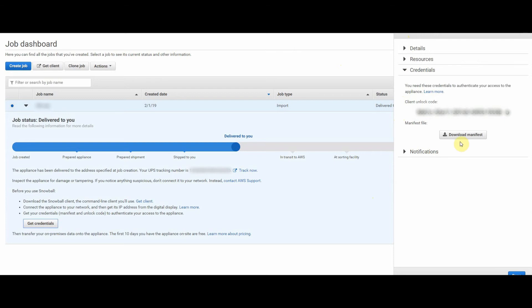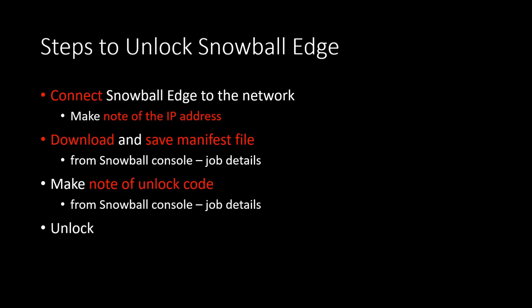So you have to connect the Snowball Edge to the network and you will get the IP address. Then download and save the manifest file, and make a note of your unlock code.